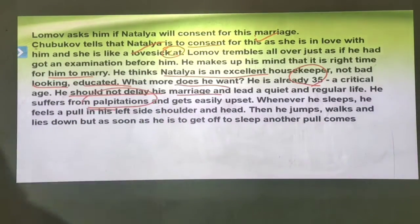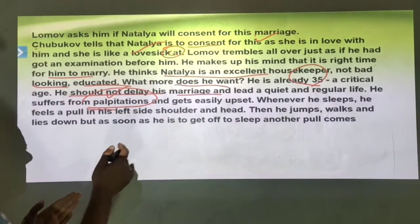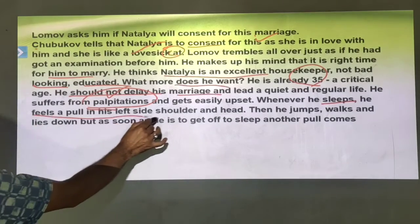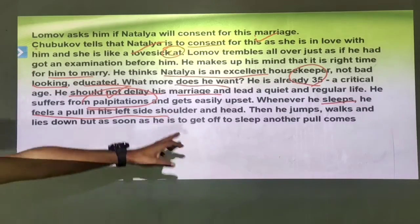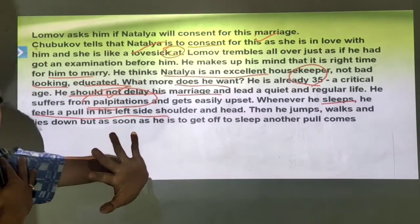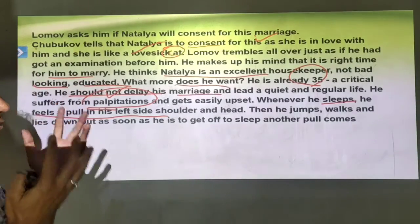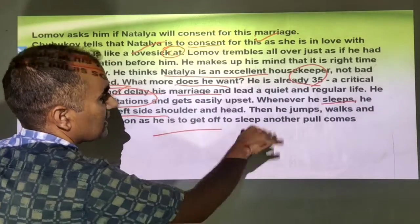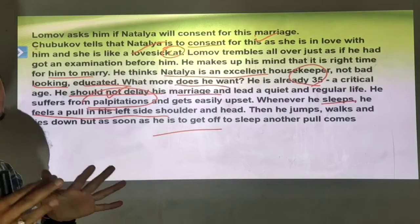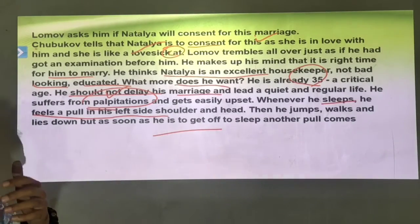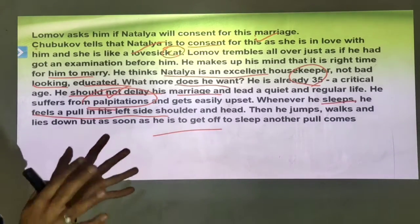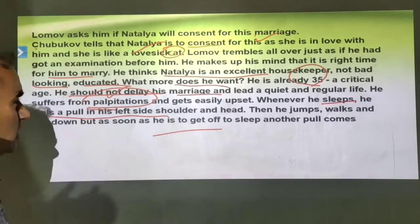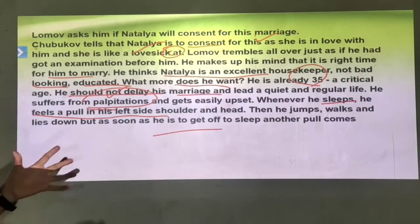Lomov decides he should not delay his marriage and should lead a quiet and regular life. He suffers from palpitation — whenever he lies down to sleep, he feels a pull in his left side, shoulder, and head, then jumps up. As soon as one attack goes away, another pull comes. This is the sort of disease from which Lomov suffers.